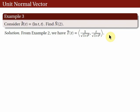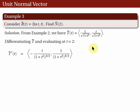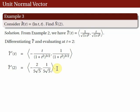We proceed by solving for T'(t) and then evaluate at t = 2. So T'(t) is obtained by differentiating the first component and the second component with respect to t. We then evaluate at t = 2 to get T'(2).